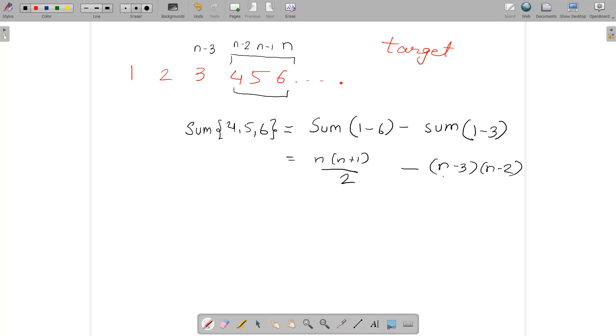Where n is 6. I am writing this down in general. If you simplify this term you'll get n² + n - n² - 5n + 6, and this whole is going to be divided by 2.